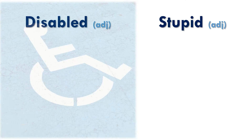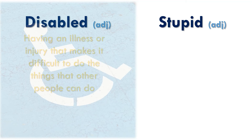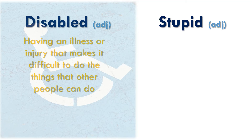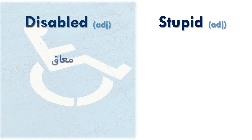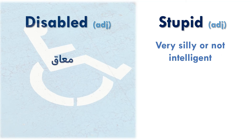'Disabled' is an adjective — معاق — meaning having an illness or injury that makes it difficult to do the things that other people can do. 'Stupid' is also an adjective meaning someone or something that is very silly or not intelligent — غبي.